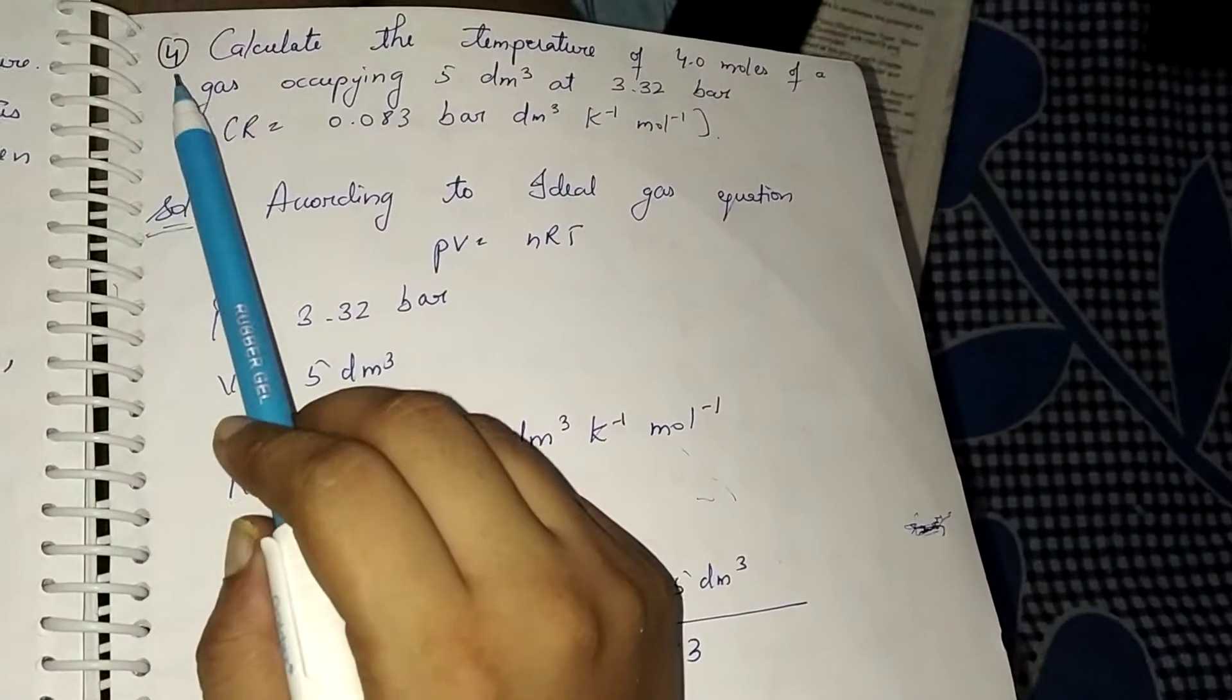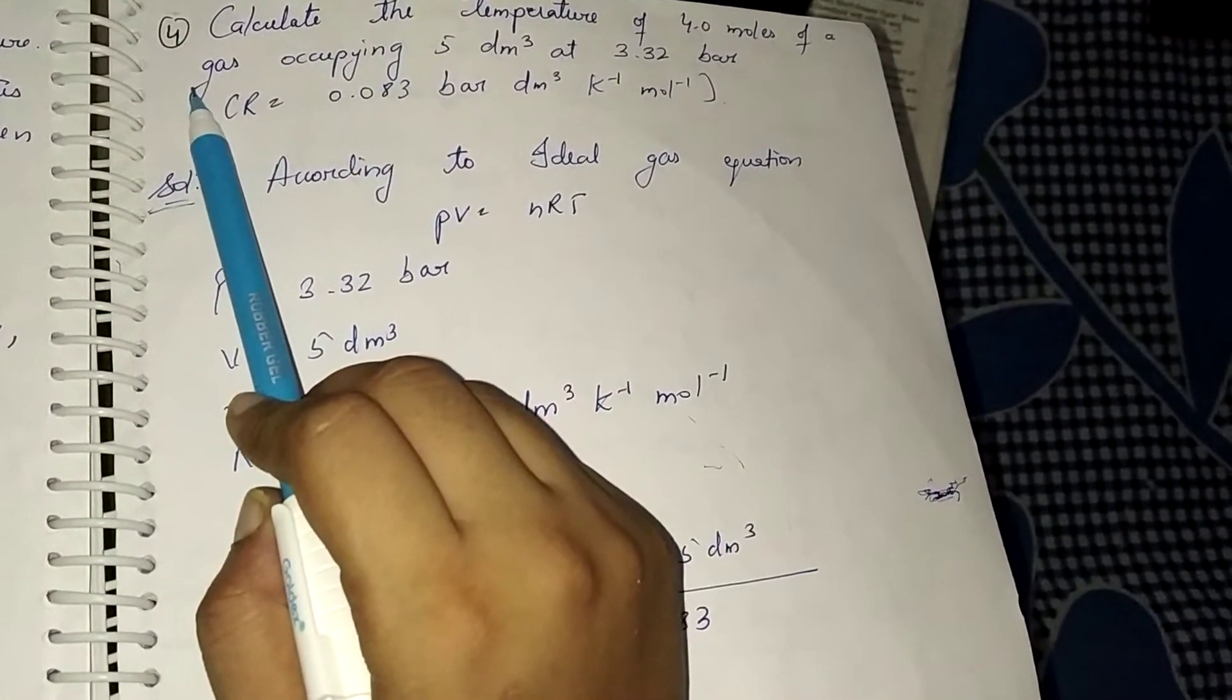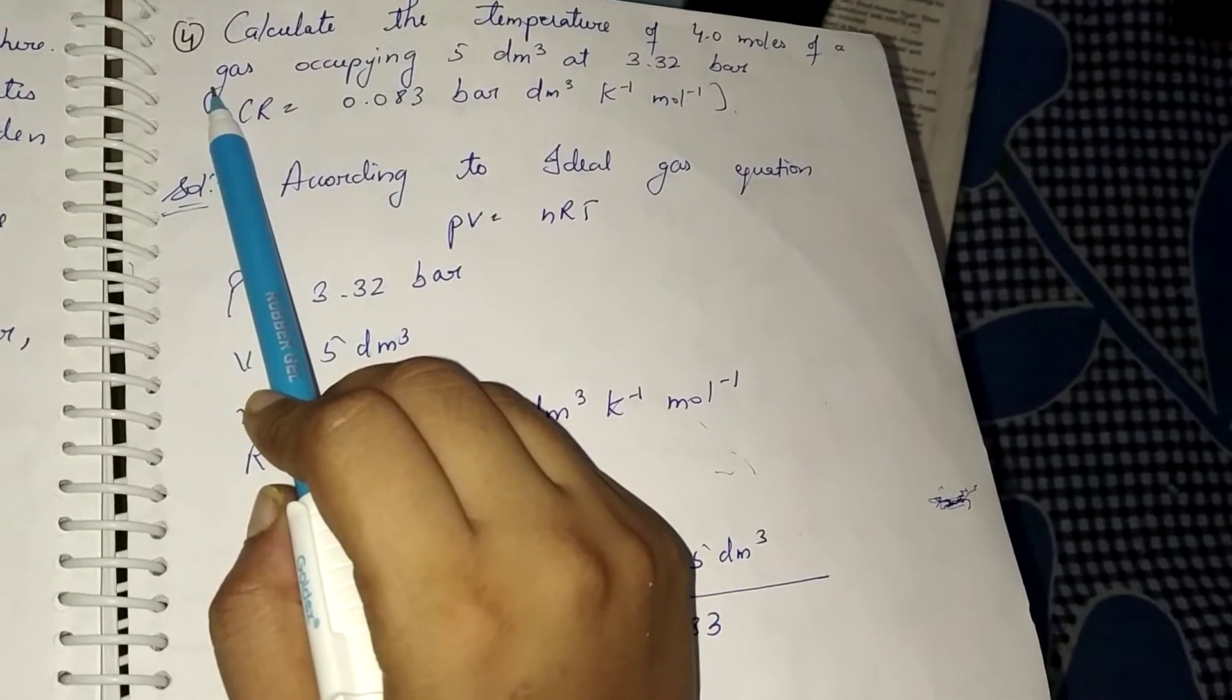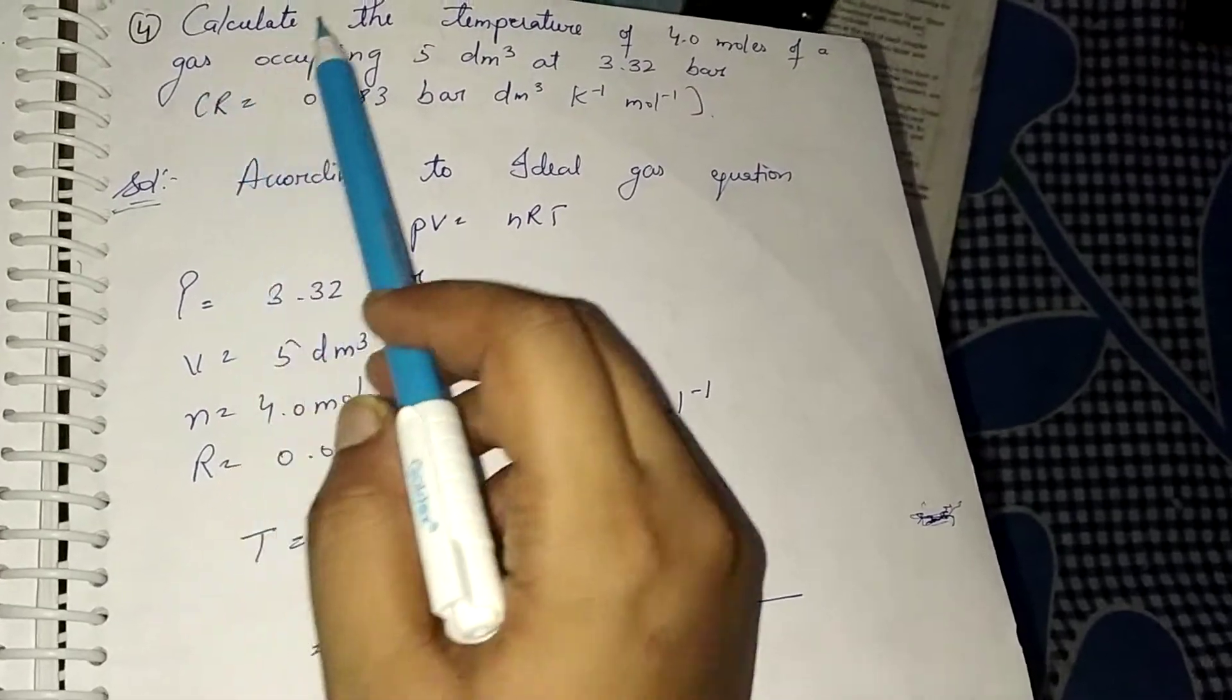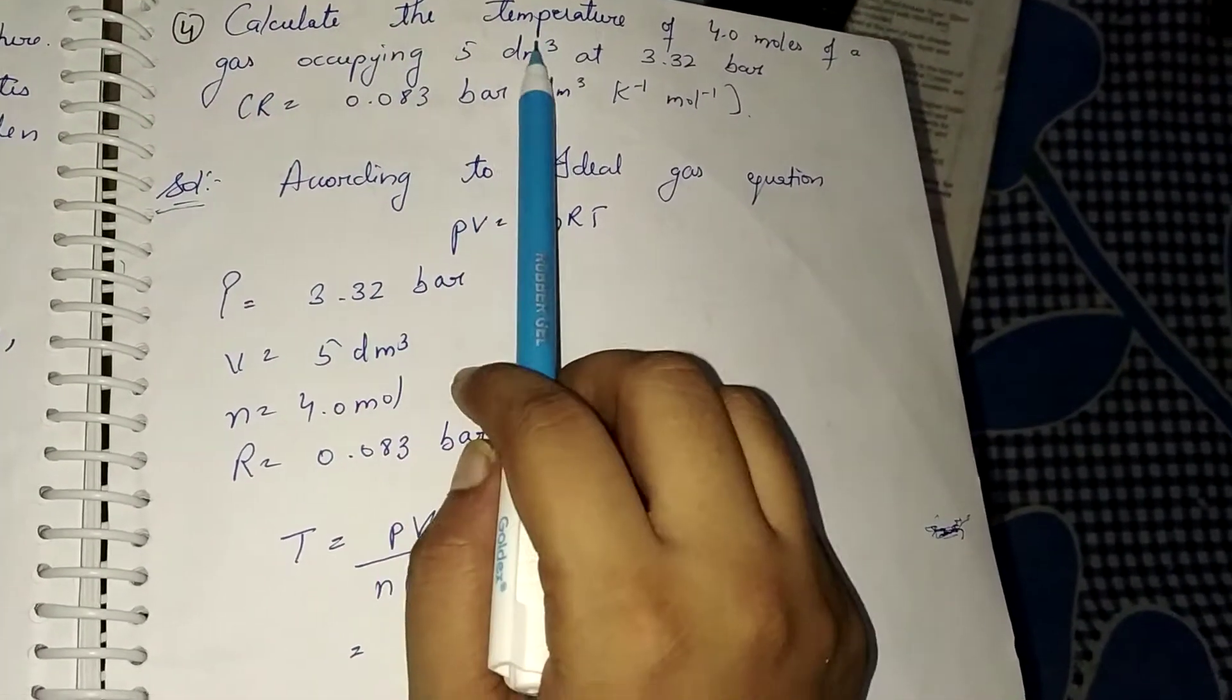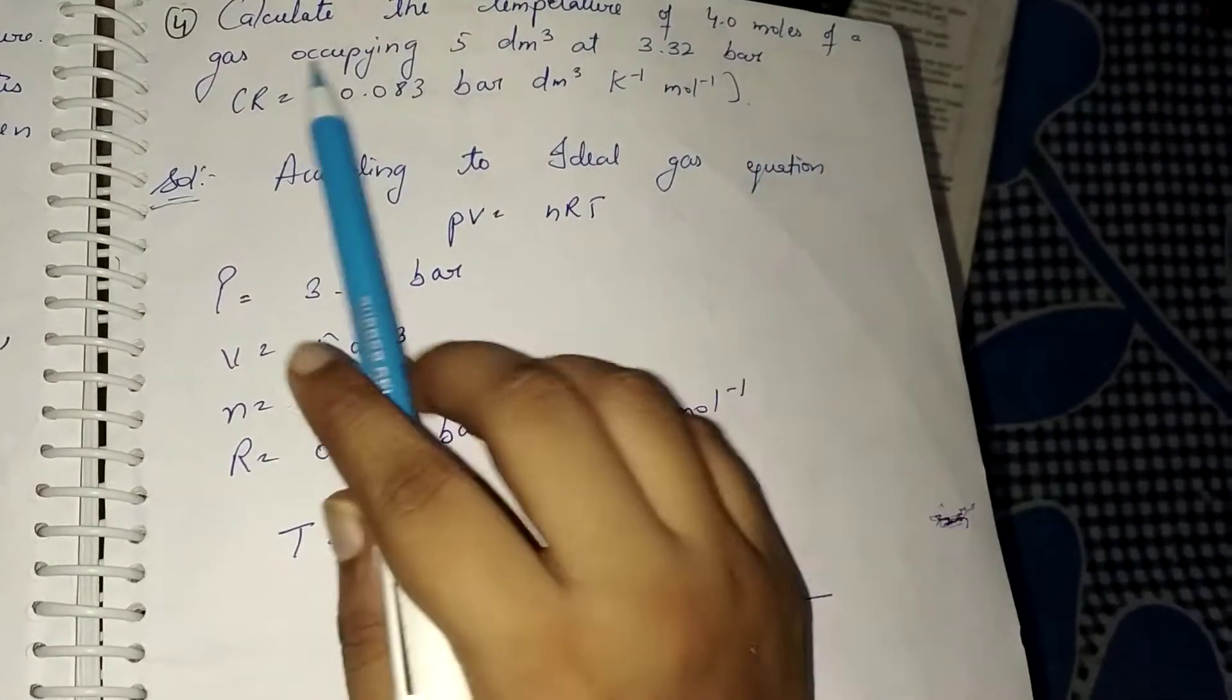Okay students, let's start with the fourth numerical. This numerical is also based on the unit states of matter. The problem is: calculate the temperature of 4.0 moles of a gas.